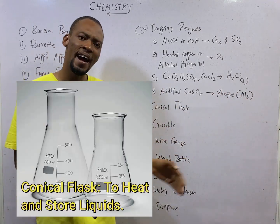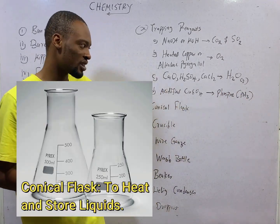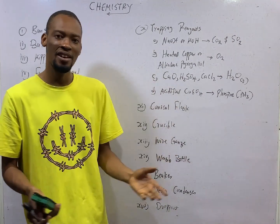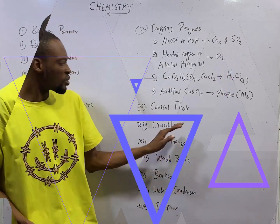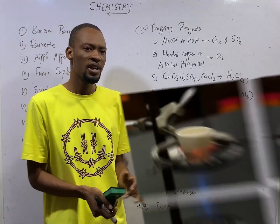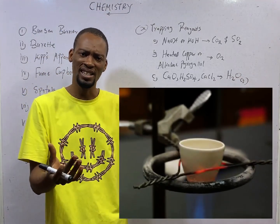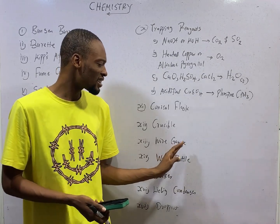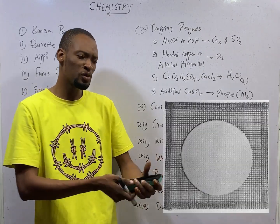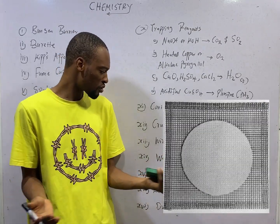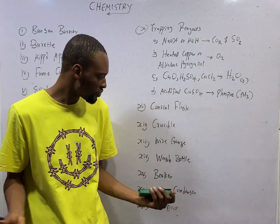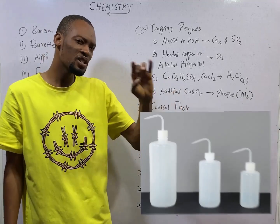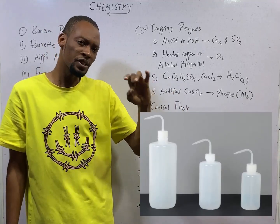Acidified copper(II) sulfate is used to trap phosphine (PH₃). Crucibles are used for heating small amounts of substances at very high temperatures. Wire gauze is used to spread heat so that it becomes uniform.